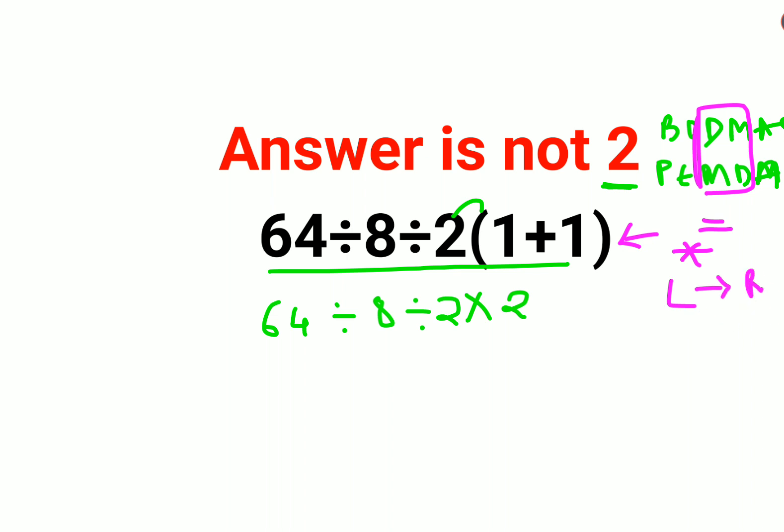So we do 64 divided by 8, which is 8 divided by 2 into 2. So now 8 divided by 2 gets you 4 into 2. That gets you 8.